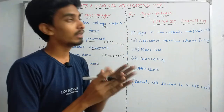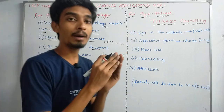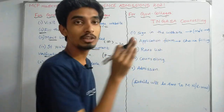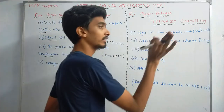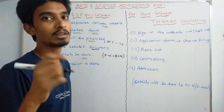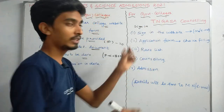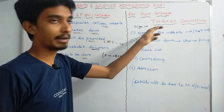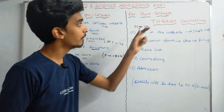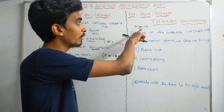Now for pure government college, you can submit a merit list. There are a lot of government colleges. Then you have counseling — TNGASA counseling — which is only for government arts and science colleges. You have seen the TNGASA website. There is a sign-in on the website. TNGASA opened in 2021, so if you go to that website, you can register and receive a login ID and password to sign in.